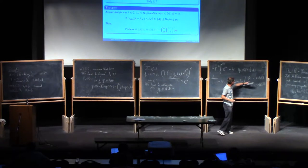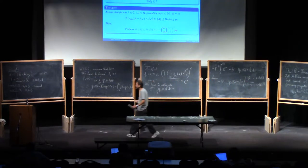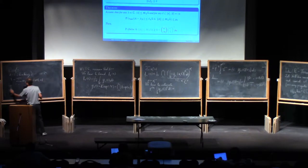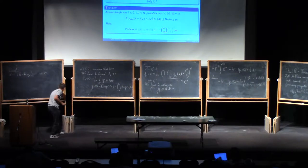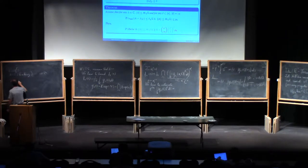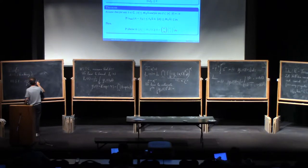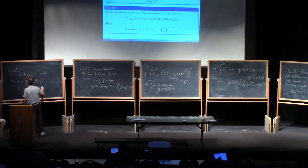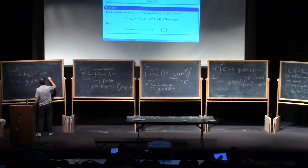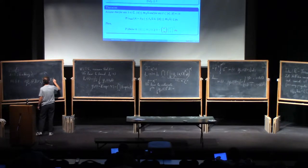The upper line is very easy. This is just Parseval's identity. First of all, the measure of t such that the absolute value of phi xj of t is greater or equal than s is by Markov or Chebyshev less or equal than the norm of phi x to L2 squared over s squared.